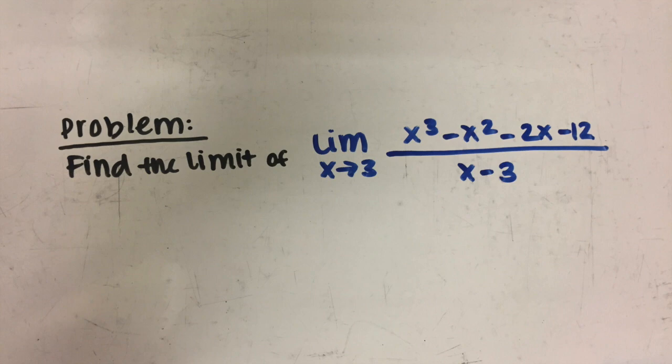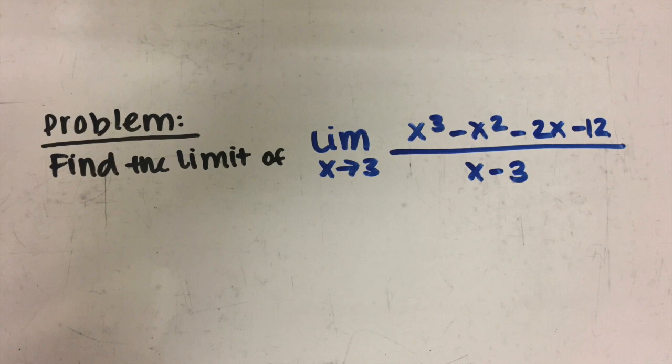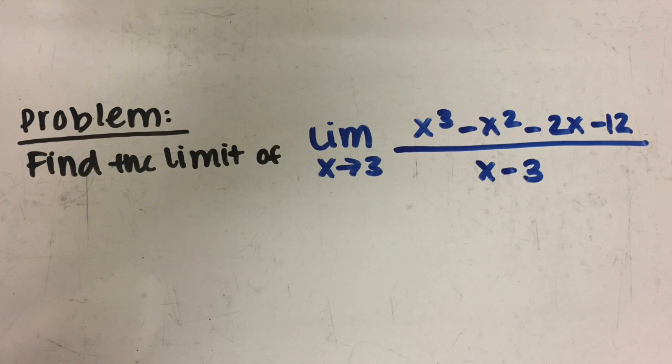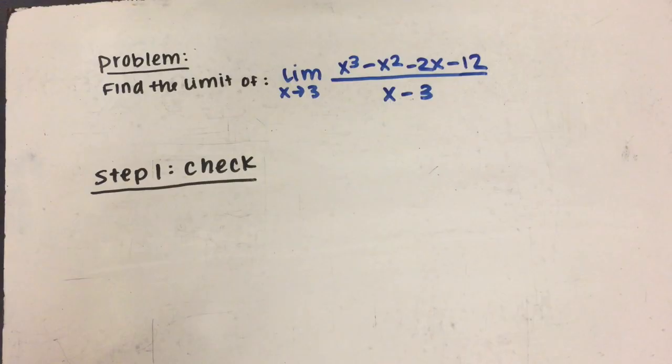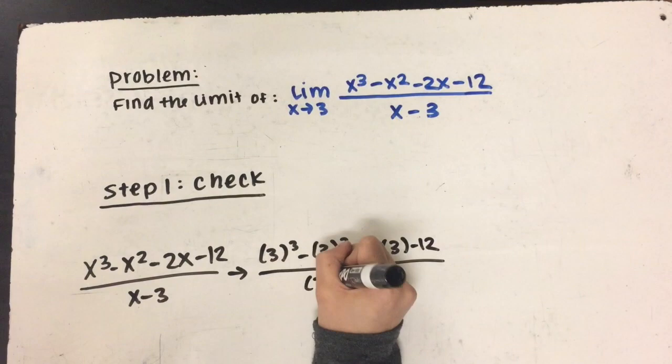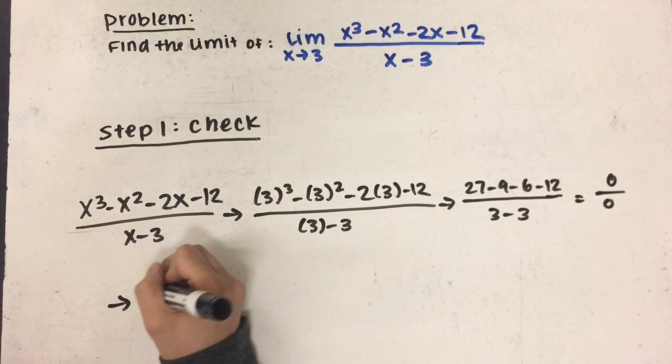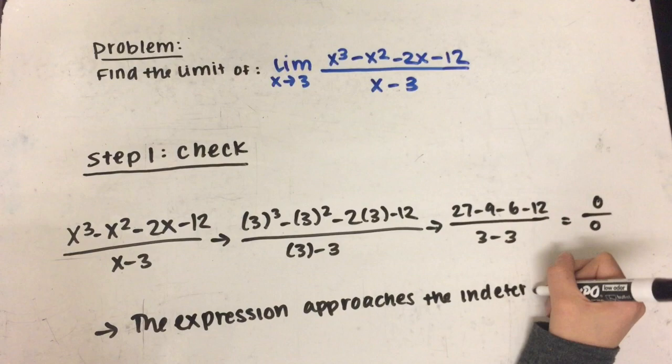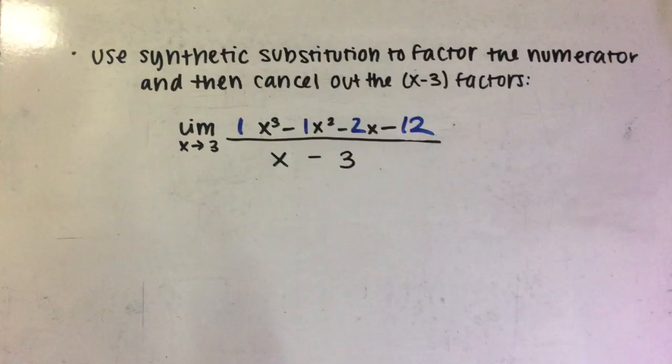Here is an example using synthetic substitution and the limit properties to find a limit of a function. Find the limit as x approaches 3 of x cubed minus x squared minus 2x minus 12 divided by x minus 3. First, we check if we can find the limit just by plugging 3 into the x's, since we are trying to see what value of f(x) the limit equals as x approaches 3. By plugging in 3 and solving, we see that both the numerator and the denominator equal 0, which shows us that the expression approaches the indeterminate form 0 over 0 as x approaches 3.